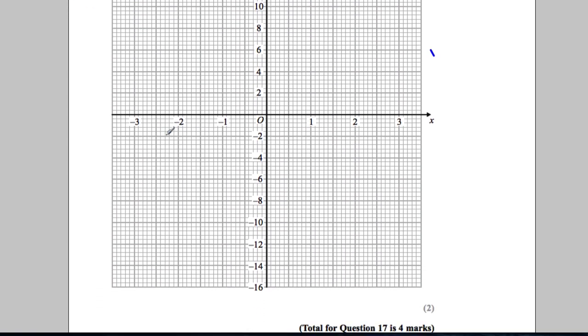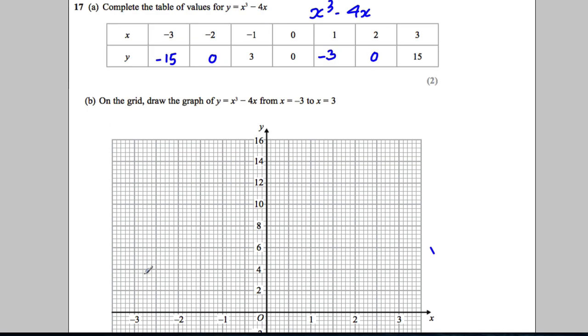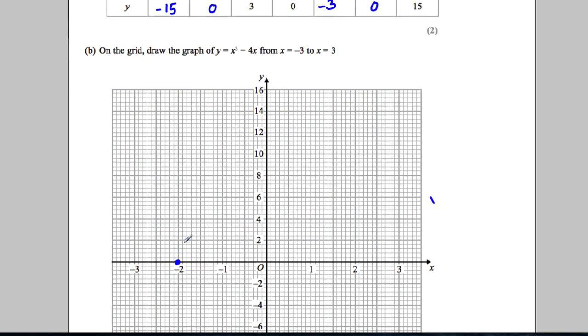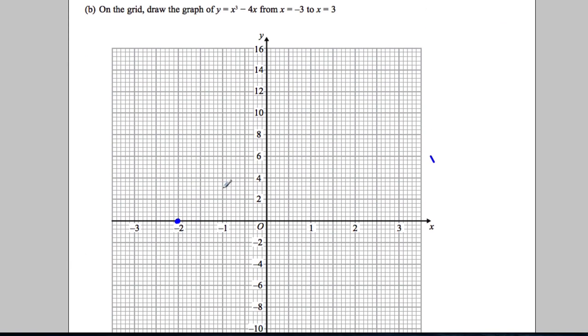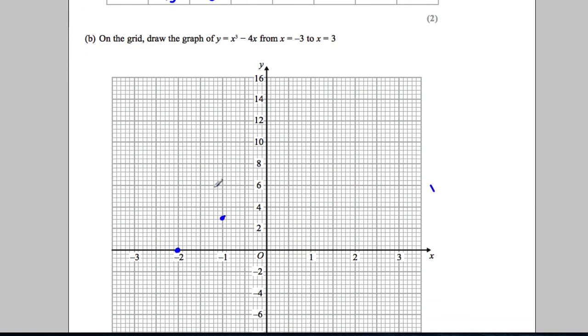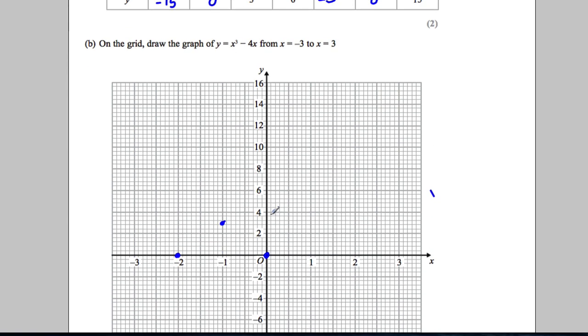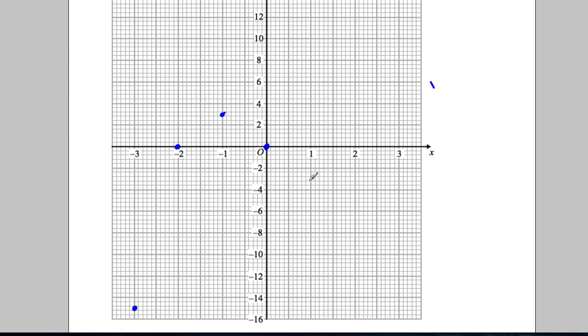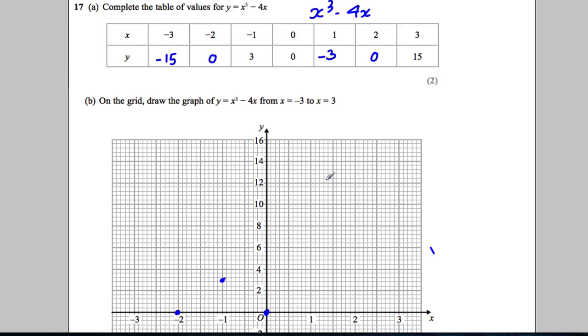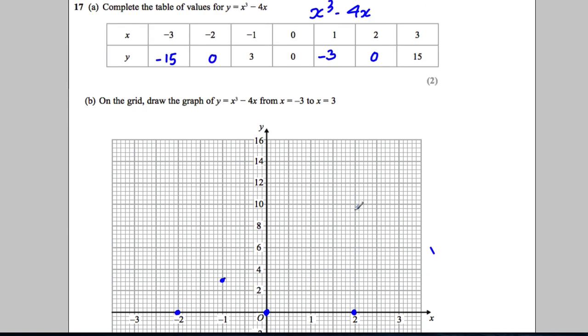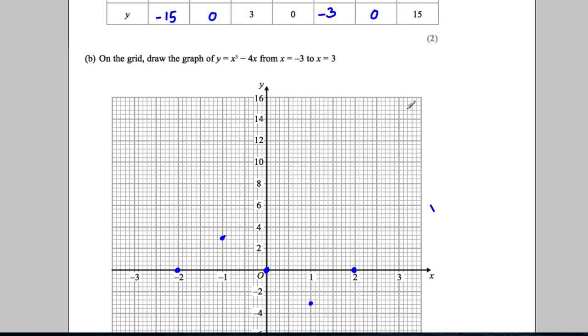-3 with -15 is here. -2, 0 is here. What have we got next? -1, 3, there you go. 0, 0. 1, -3 is here. 2, 0, 2 across 0 is here. And the last one is 3, 15, so 3, 15 is going to be up here.